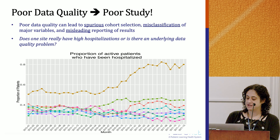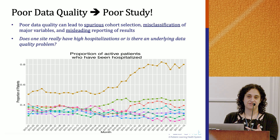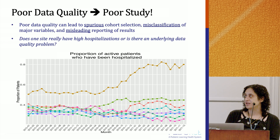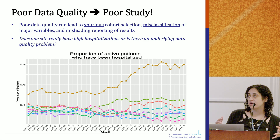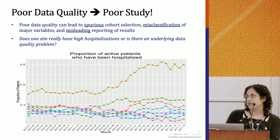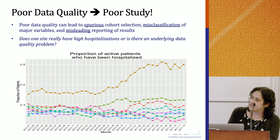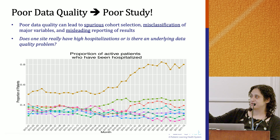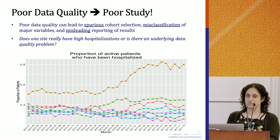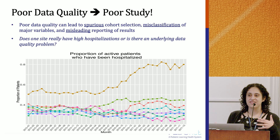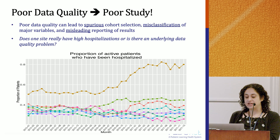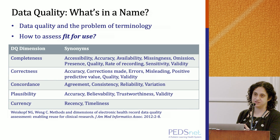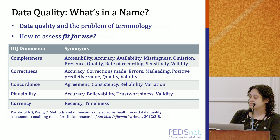Data quality has no formal consensus definition. The most widely adopted concept is 'fit for use,' and poor data quality leads to poor study results. As an example from PEDSnet: we were looking at a cohort of patients with kidney disease, examining the number who had been hospitalized over time, and one site was a huge outlier. When we looked deeper, we realized it was because of how that site was classifying an inpatient visit versus how other sites were. It looked artificially inflated. Poor data quality can lead to spurious cohort selection, misclassification of major variables, and misleading reporting of results.